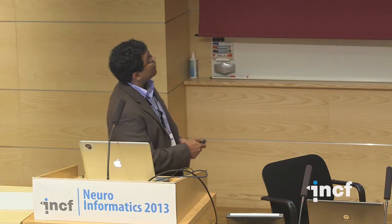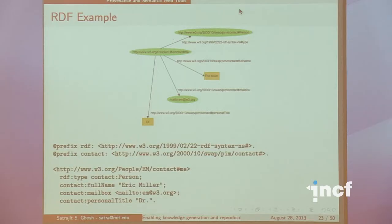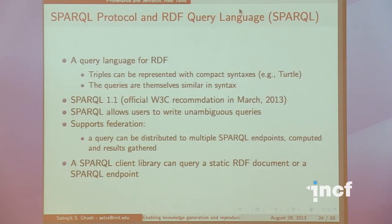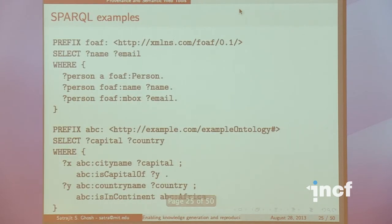Semantic web tools provide a framework that allows us to describe data in a consistent manner and represent data as relations in a graph — building up nodes in a graph. For example, somebody talking about a person whose full name is Eric Miller, whose mailbox is a given email address, and whose title is Doctor — that's represented as a graph. The more we connect nodes and edges, the more richly connected a set of information we create. SPARQL is a protocol and RDF query language that allows unambiguous queries with federation built in by default, so you can create RDF stores anywhere and query across them.